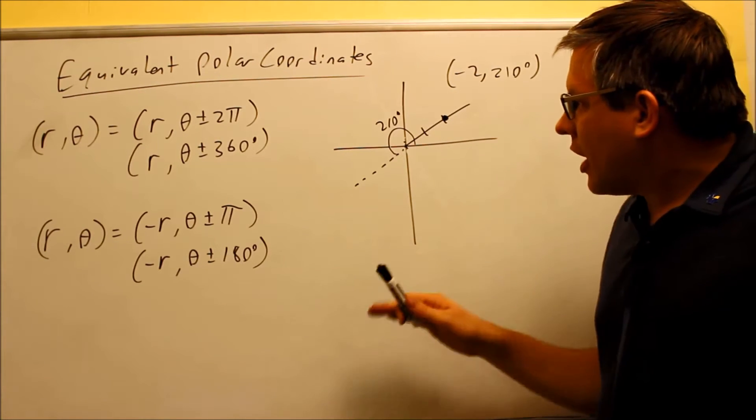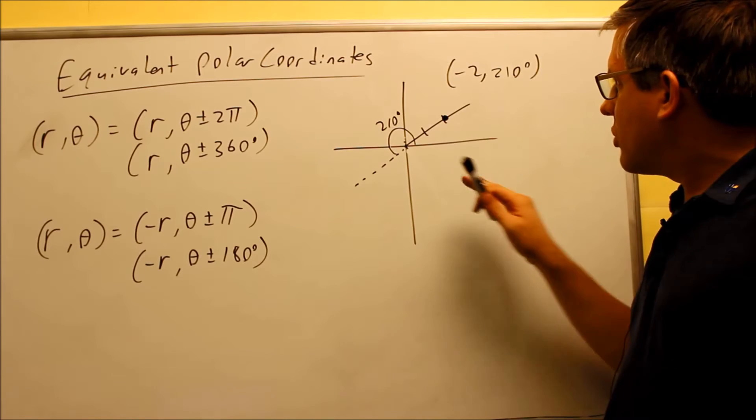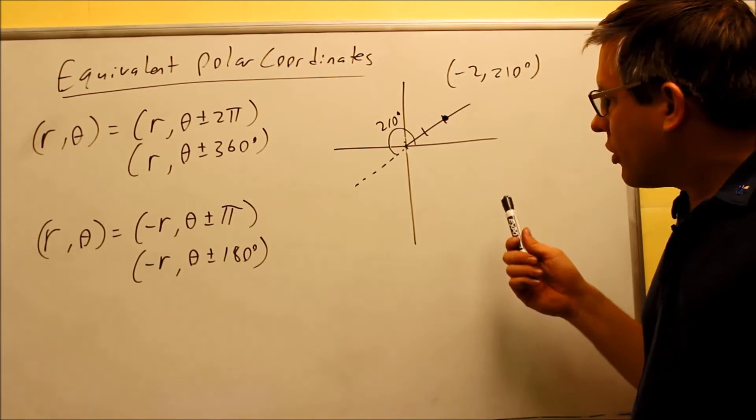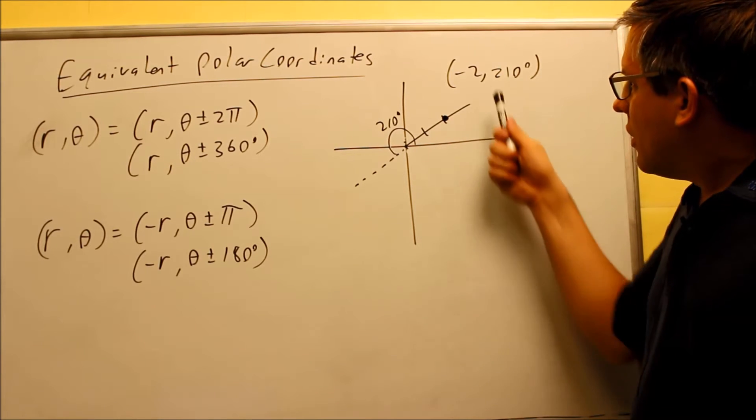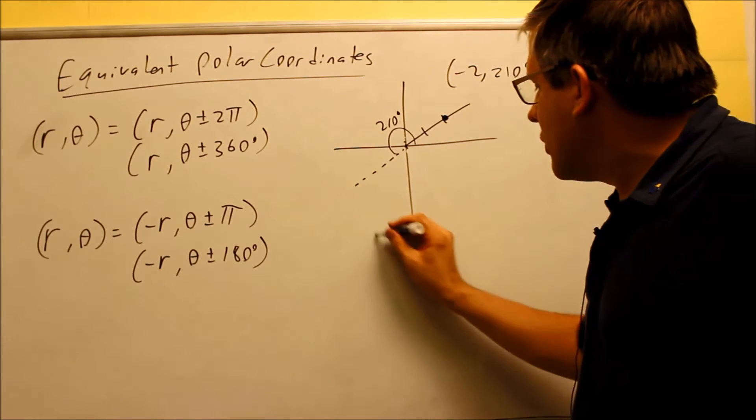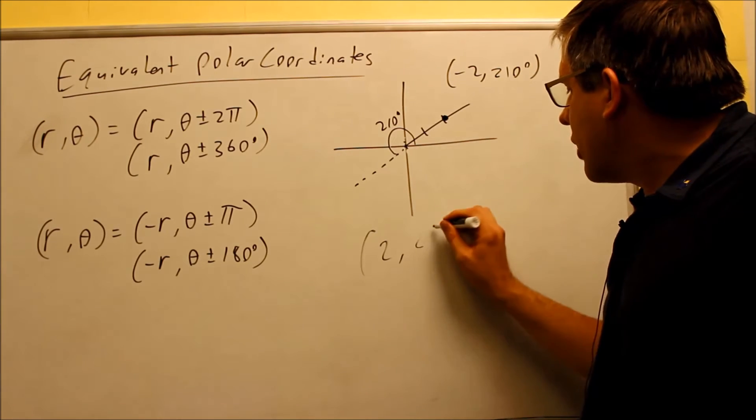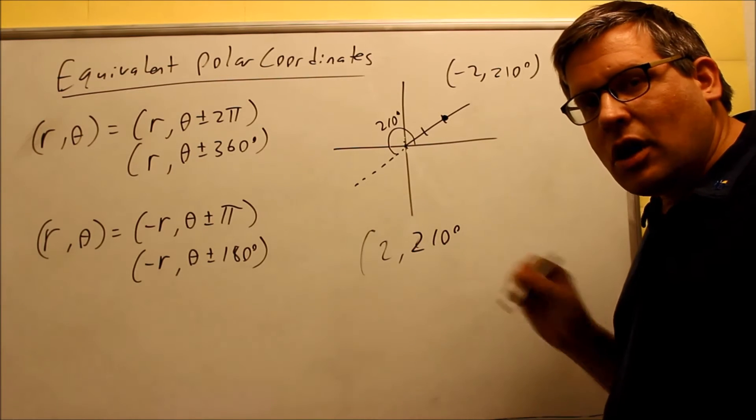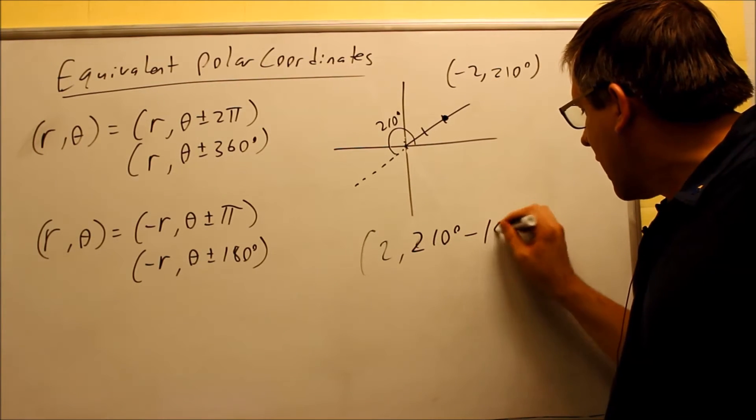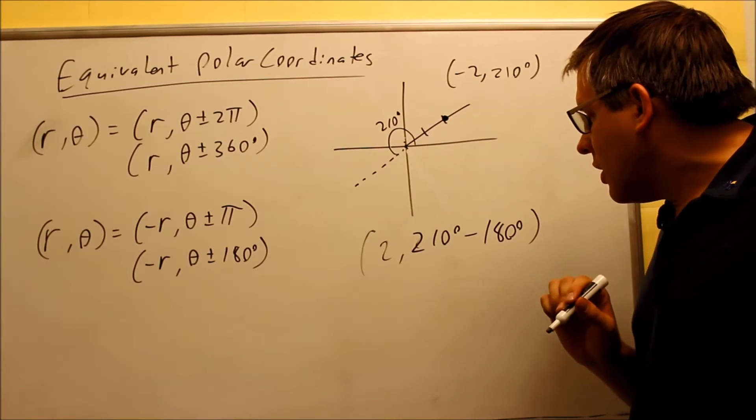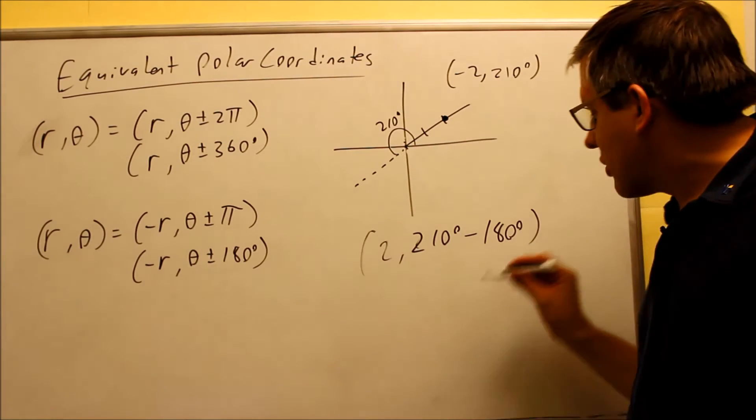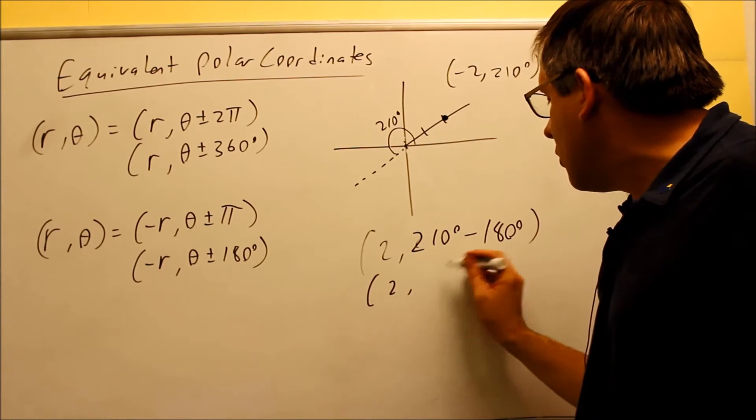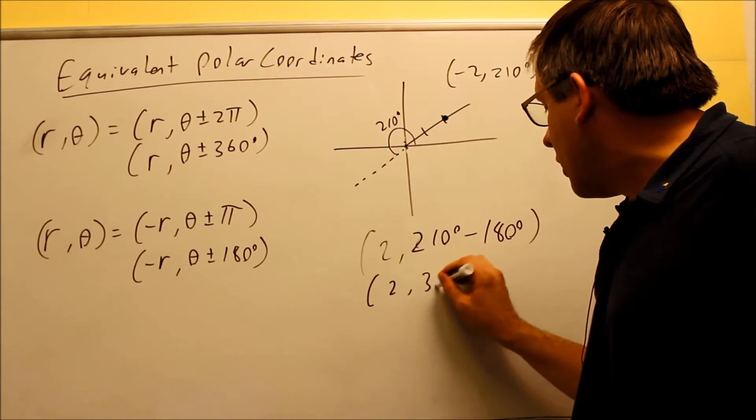So in order to illustrate that, I'm going to take this point and suppose that I wanted to rewrite this point with a positive r value. Well, what I could do here is change the -2 to a positive 2, and then the 210 degrees, I need to either add or subtract 180. Let's see what happens when I subtract 180, because if I add 180, then I'm going to be more than 360. So let's subtract 180 from it. If I do that, here's the point that I get: I get (2, 30°).